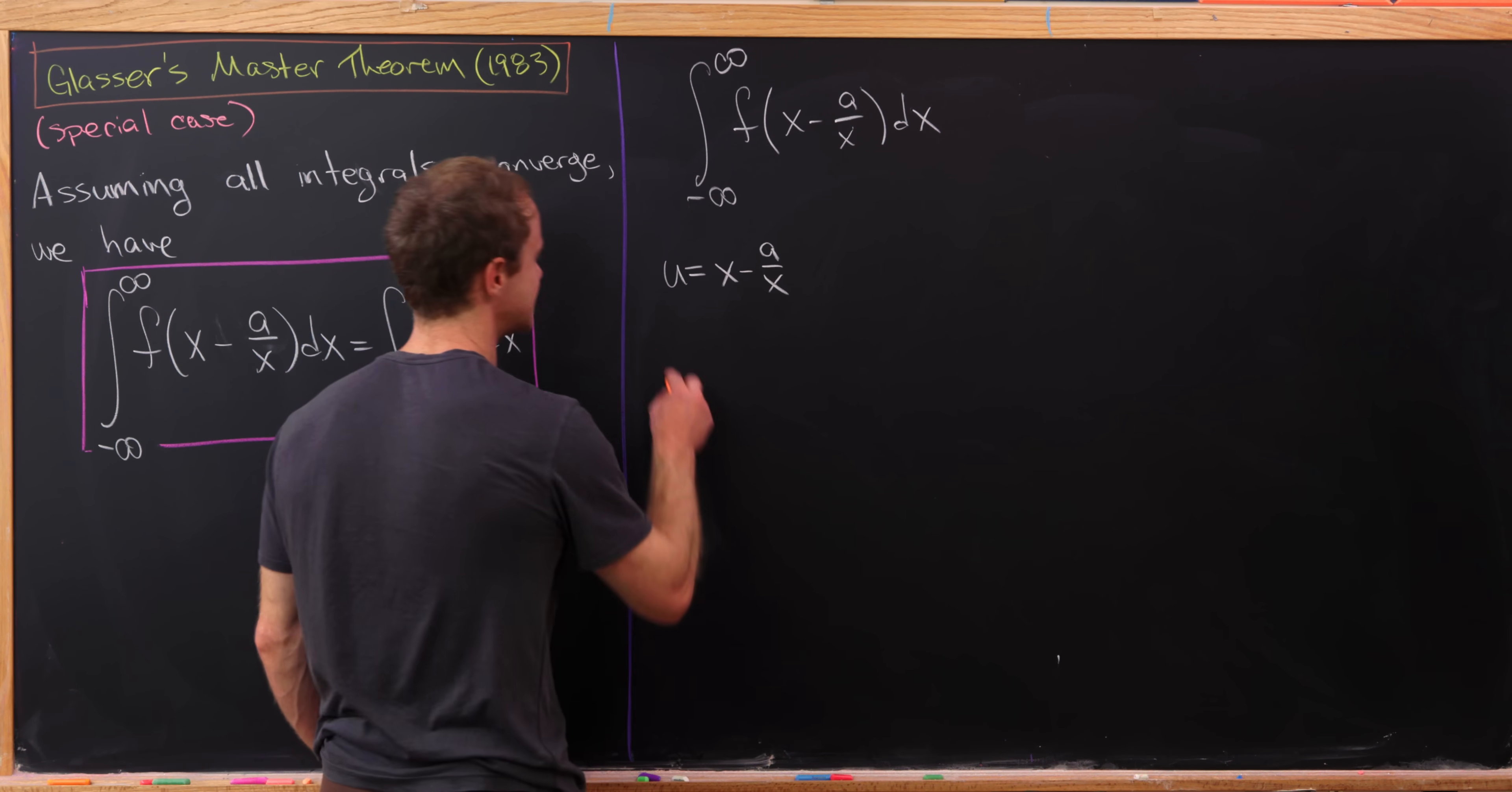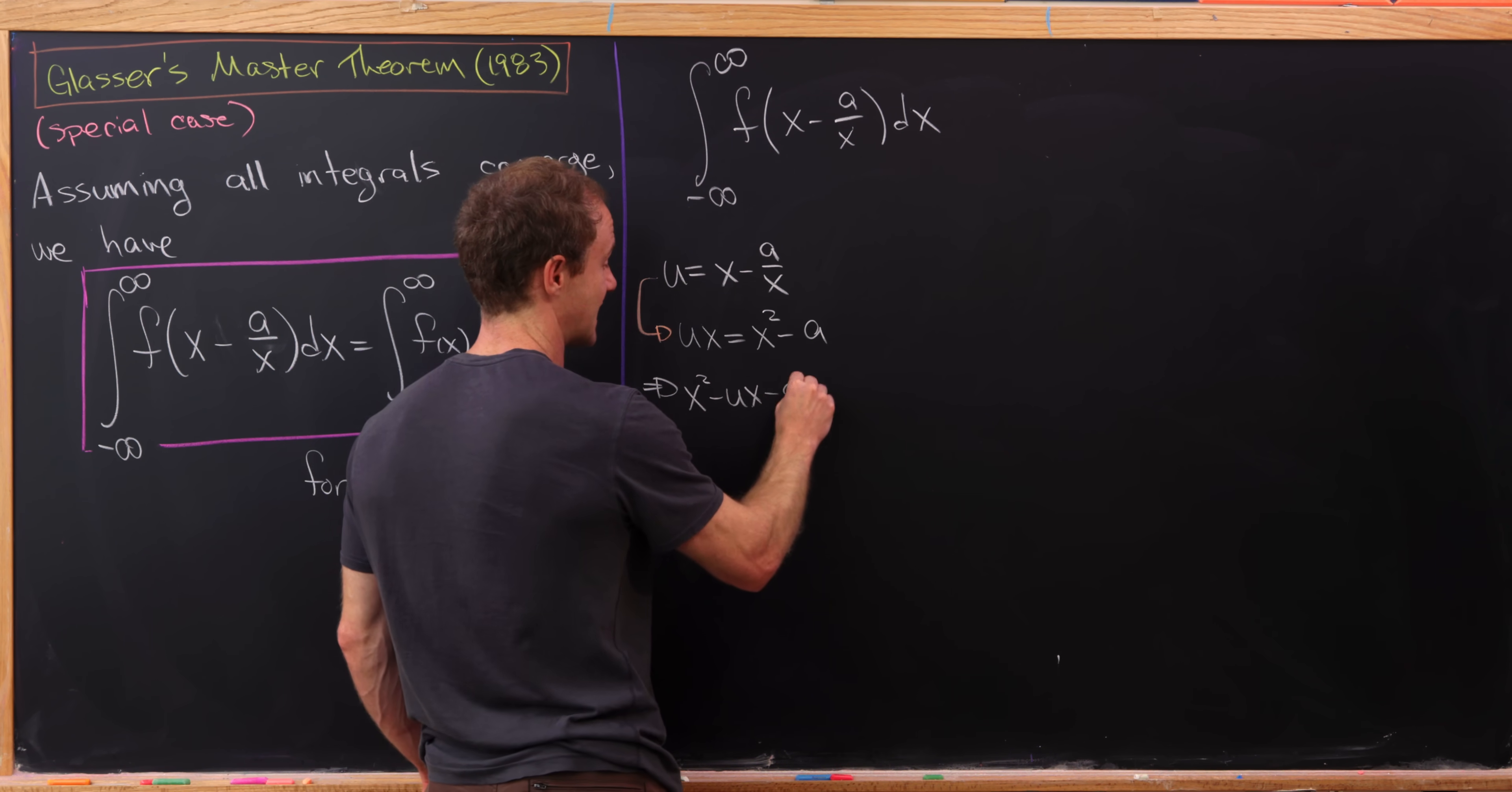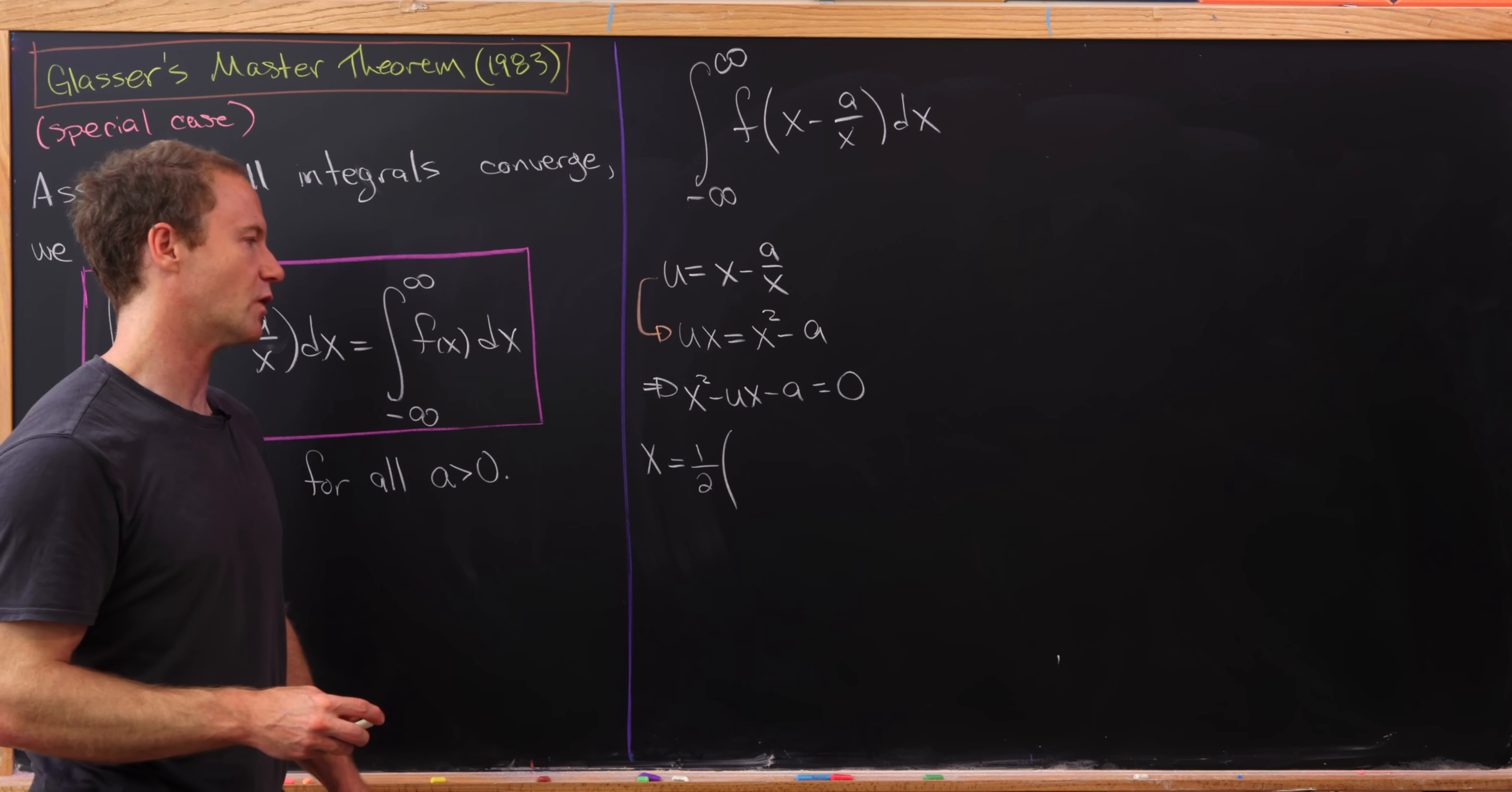So let's see what that'll give us. Starting to solve this for x, we will see that u times x is equal to x squared minus a, which in turn tells us that x squared minus u times x minus a is equal to zero. Now we can solve that using the quadratic formula. So this means that x is equal to one half, that's like the over two part of the quadratic formula.